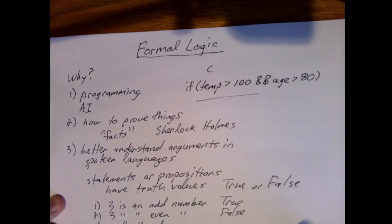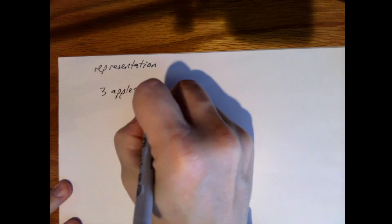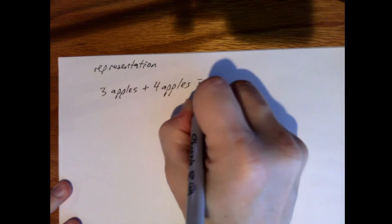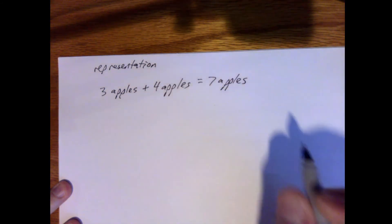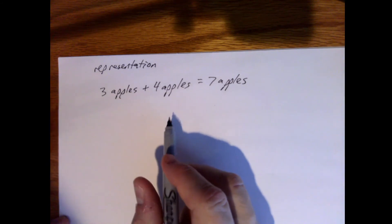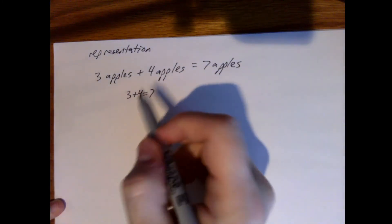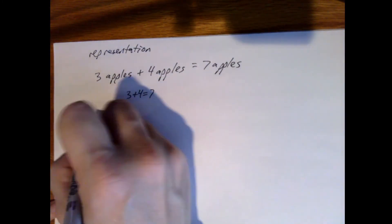Okay, so let's talk about representation before we move on. Let's think about math for a second. Let's say we had this problem: 3 apples plus 4 apples equals 7 apples. That makes sense, right? And these are my units, apples. But how would you typically do this problem? Well, you'd leave out the apple and just say 3 plus 4 equals 7.